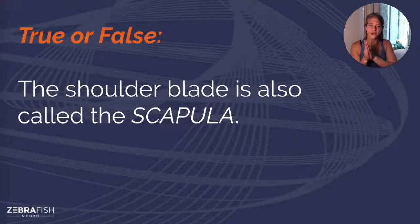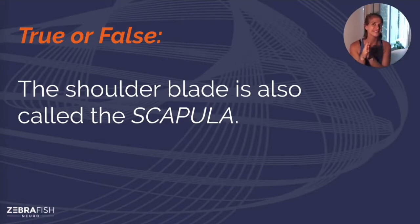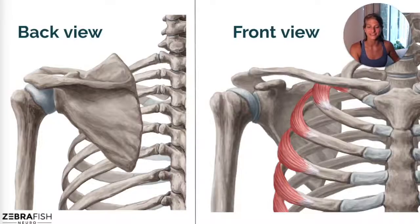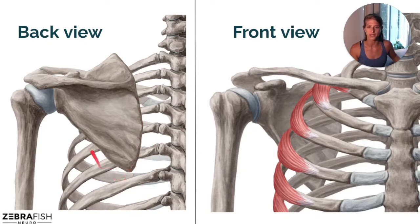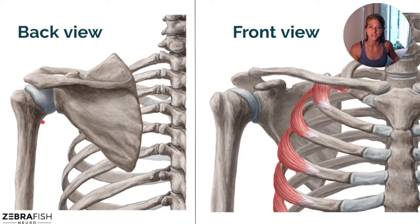Some trivia for you — true or false: the shoulder blade is also called the scapula. That statement is true. Our shoulder blade is also called our scapula — it's this triangular bone that has a border on the inside part and a tip at the bottom. It also has a place for our upper arm bone to set into the scapula. The shoulder complex also involves your collarbone right in front.